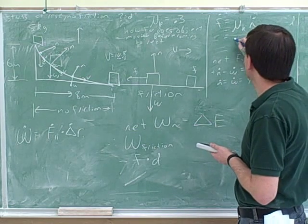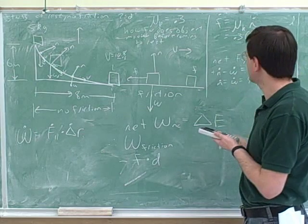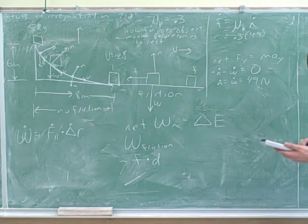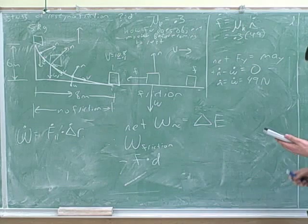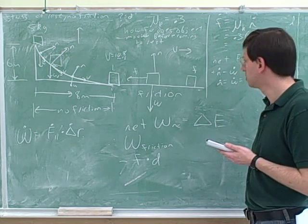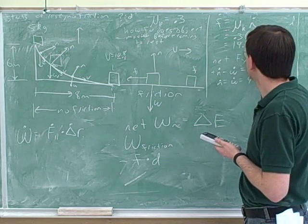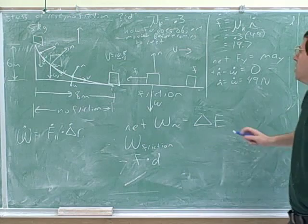So we know that our normal, so mu k here is 0.3, and we know our normal force is 49. So what do we get for the frictional force? Minus 14.7. That's right.